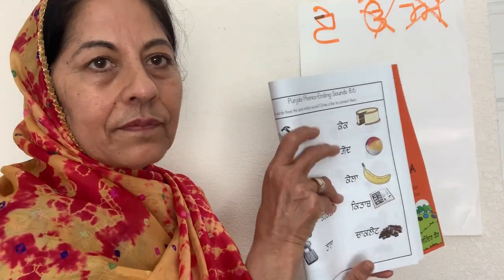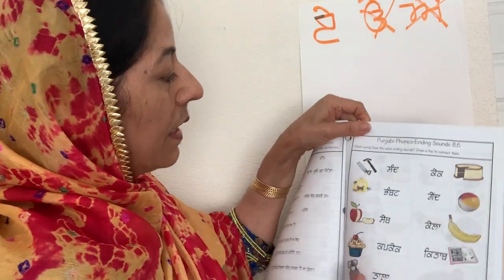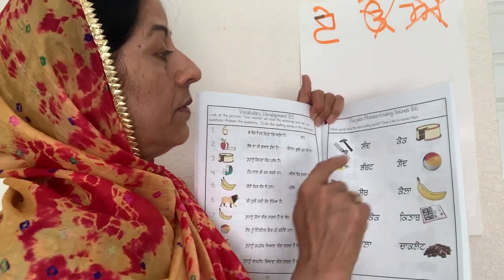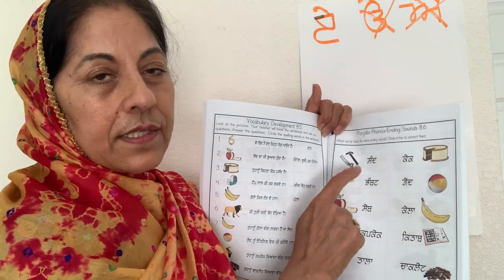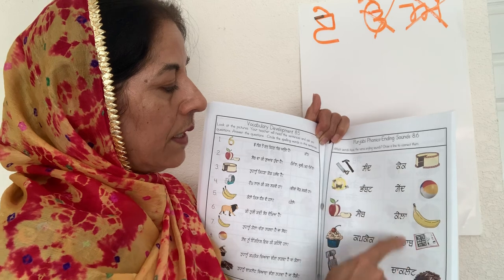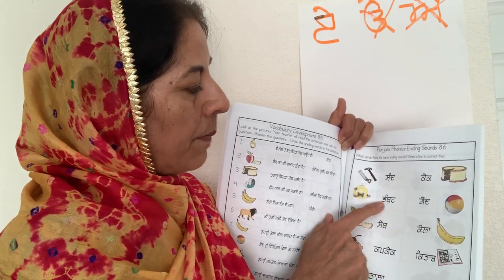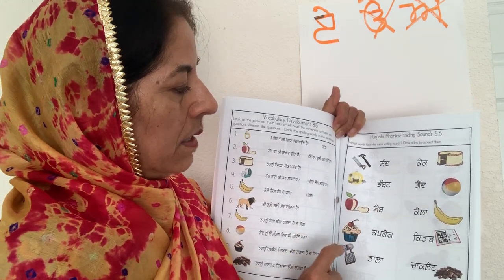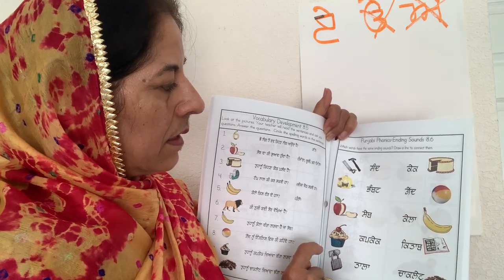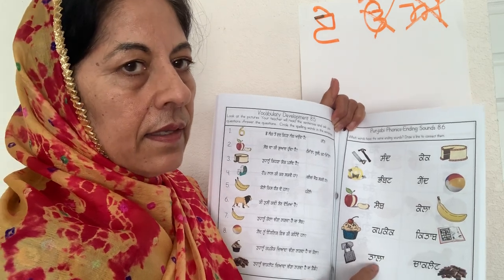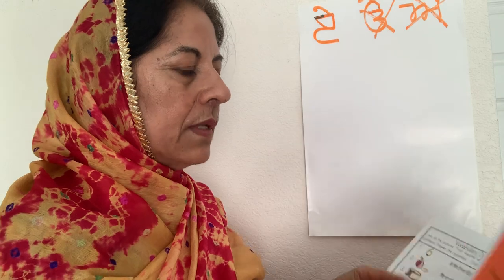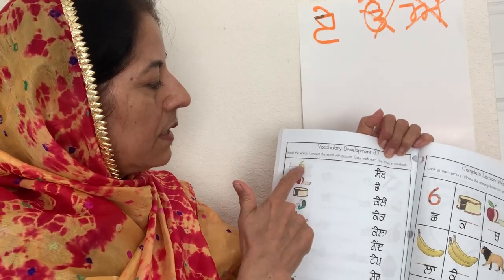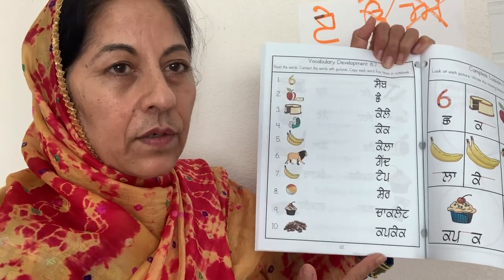Now this one is phonics — you have to read the directions. Which words have the same ending sound? Draw a line to connect them. This one is SAND — which one of these words has the same ending? Good job, you got it. Which one has chocolate at the end? Say which one — cupcake, TALA, and this one is KILLA. So this was phonics with the ending sound. Now you have the same words and same pictures — look at the picture and see where the word is. That's easy, right? Pause the video and do it.